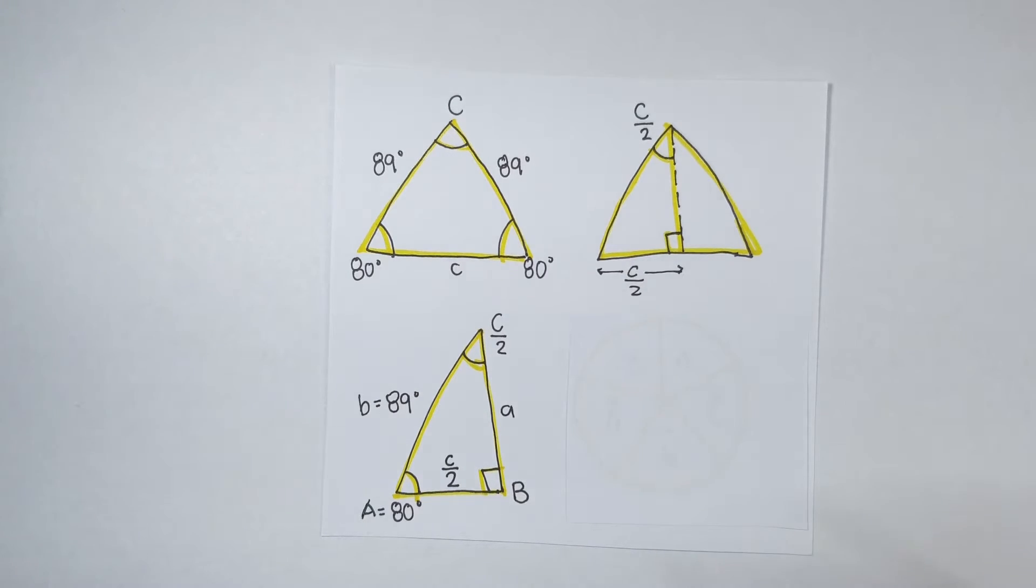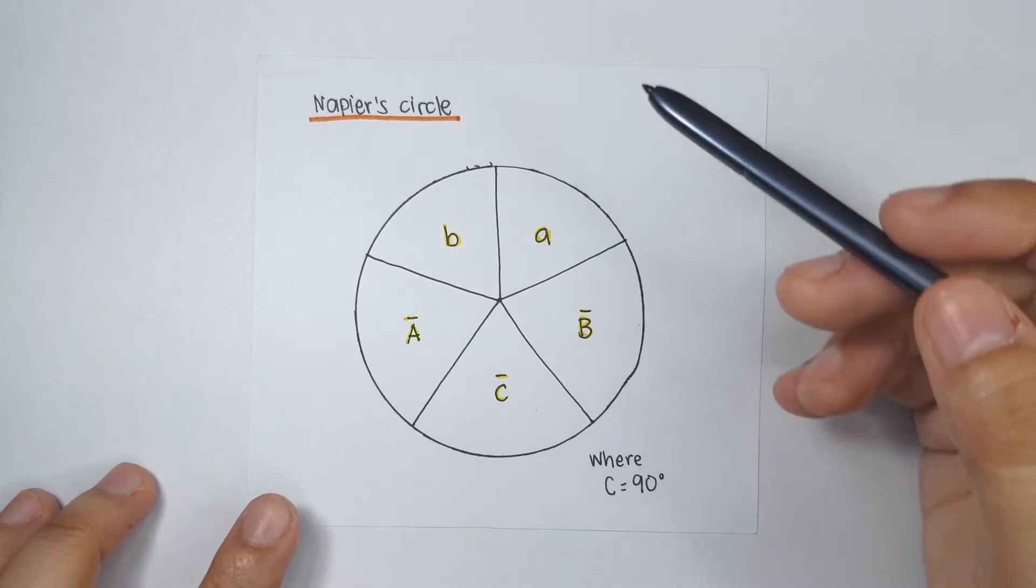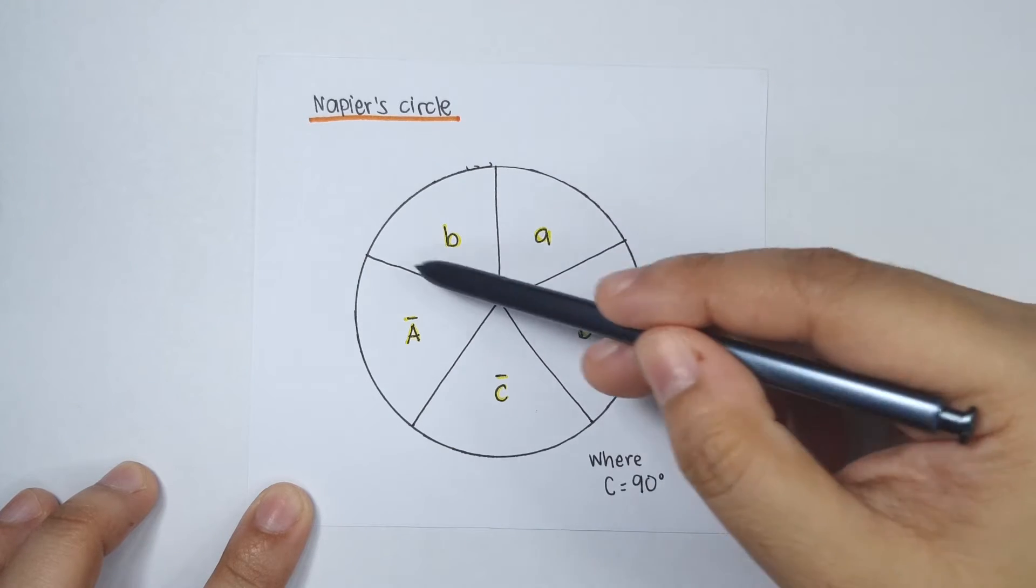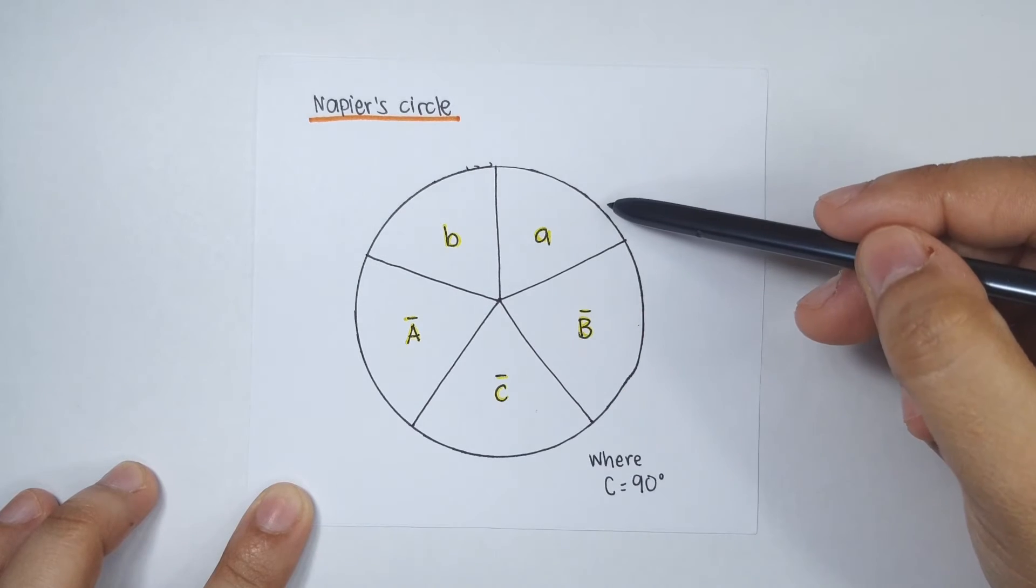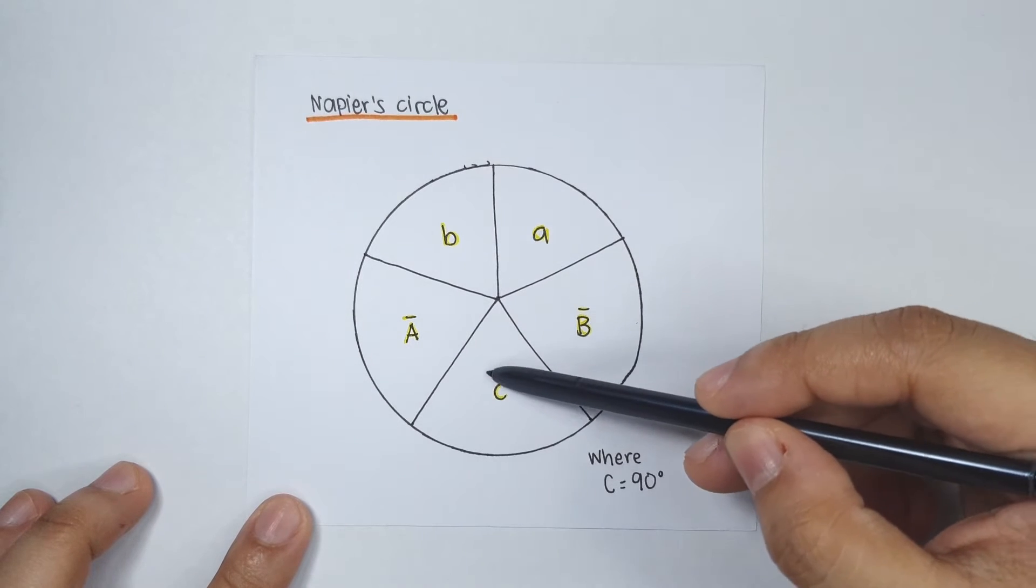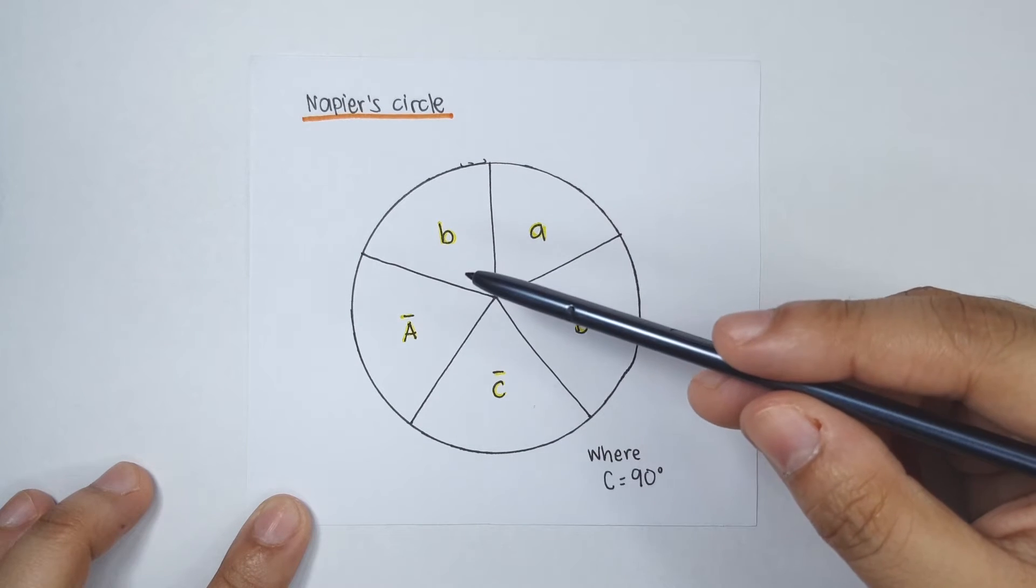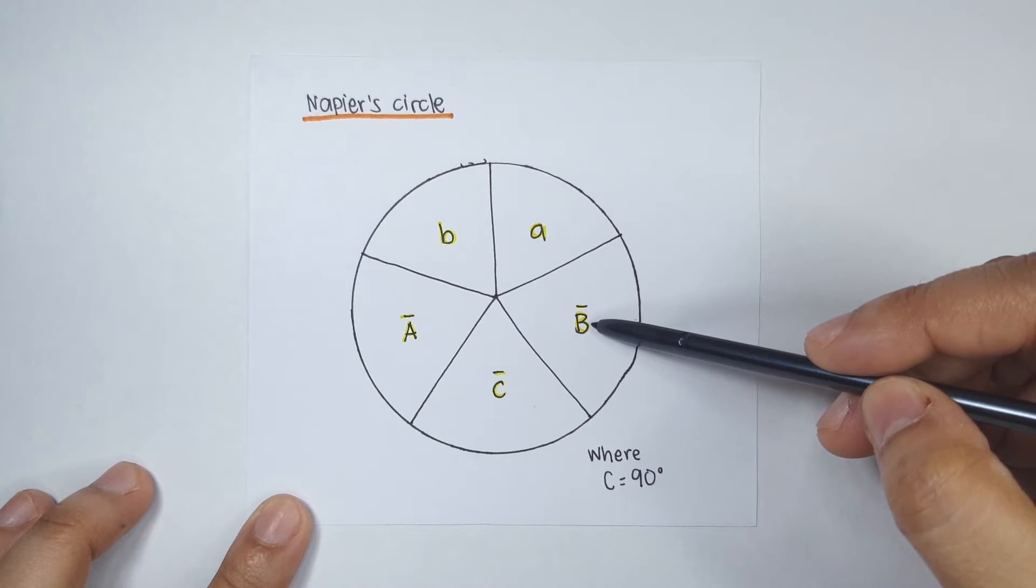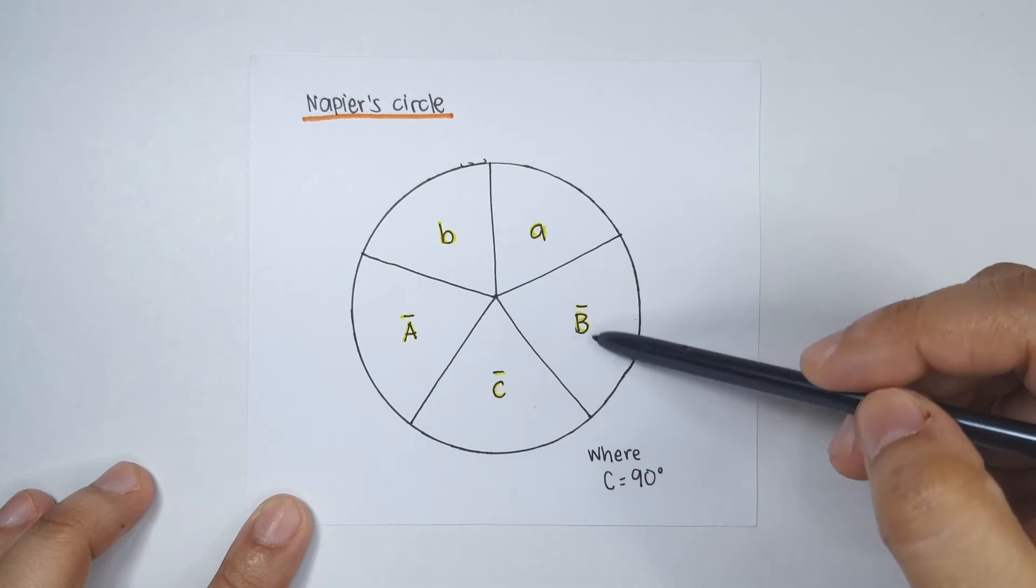And if you've seen my video regarding the Napier's rule, I've taught you how to draw the Napier's circle. So, let's draw a stick body, legs, arms, and a big circle. And assuming that angle C is 90 degrees, then we will put here small letter C bar for side C, then A bar, B bar, then alternating A's and B's, so A, B, A, B.